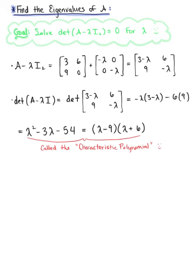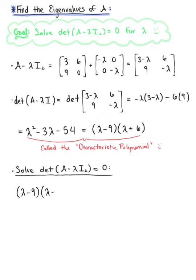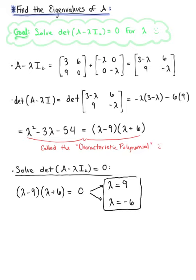We know we're setting this determinant equal to zero, so we factor: lambda minus 9 multiplied by lambda plus 6 equals zero. By the zero factor property, we have two solutions: lambda equals 9 and lambda equals negative 6. These are the eigenvalues of matrix A.